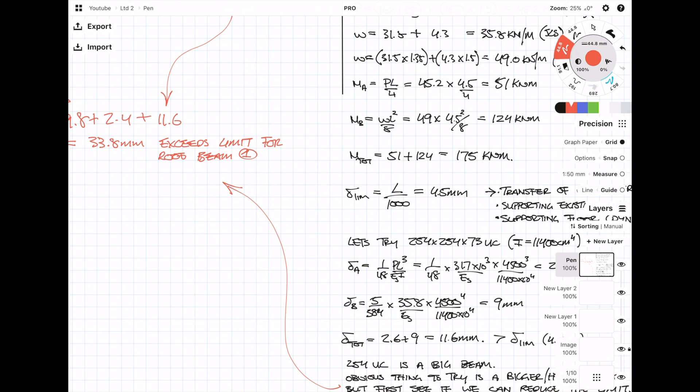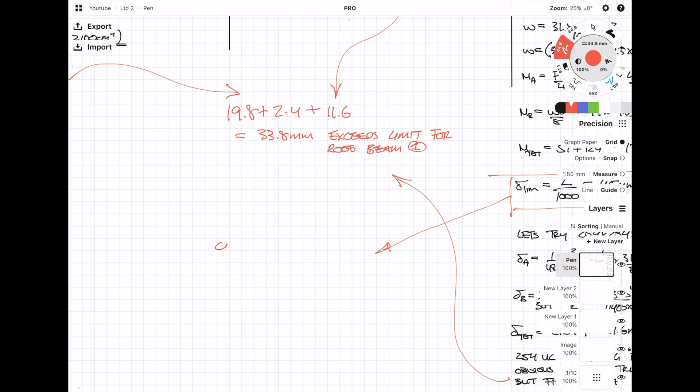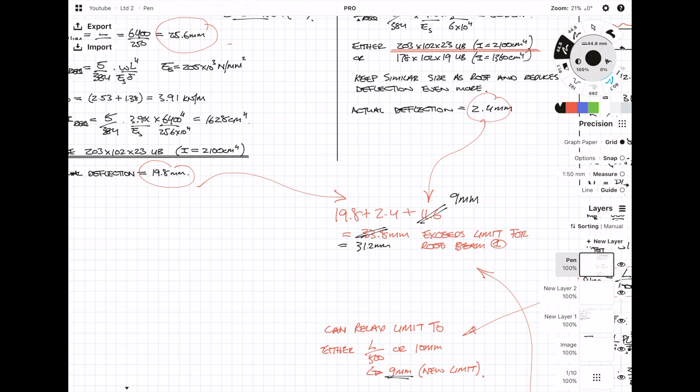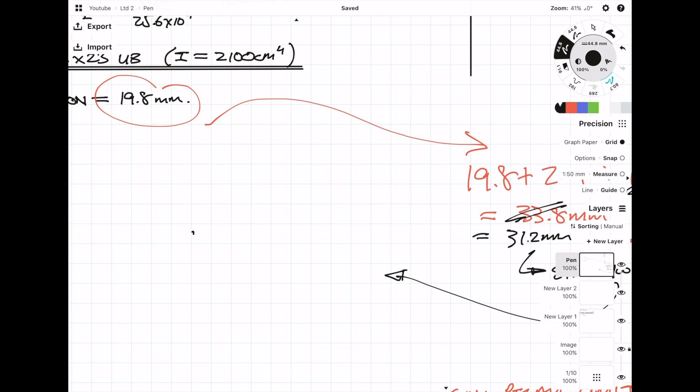What I'm actually going to do is relax the deflection limit on the second transfer beam. So instead of span over 1000, I'm going to try span over 500 with a limit of 10 mm. In this case, because span over 500 is 9 mm, which is less than 10 mm, I'm going to be limiting the deflection to 9 mm. Even with a new limit of 9 mm, the combined deflection or the compounding deflection is still exceeding the deflection of the roof beam limit, so that means we'll need to increase the size of the roof beam.